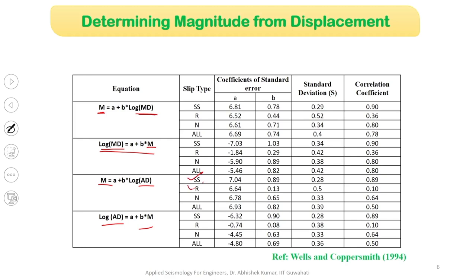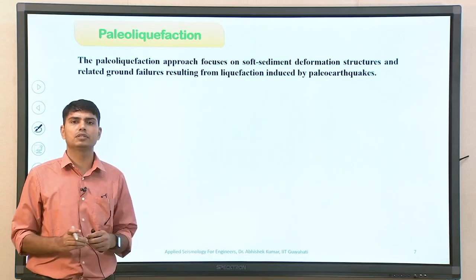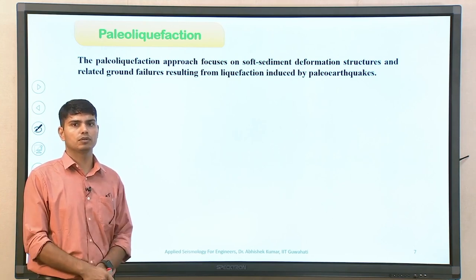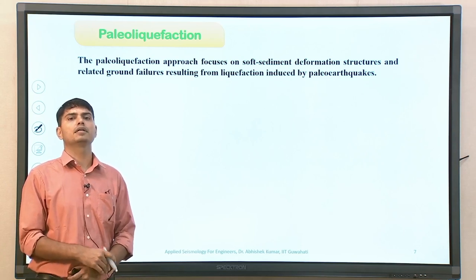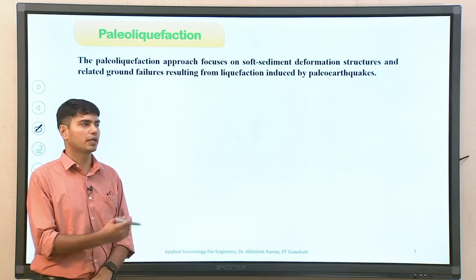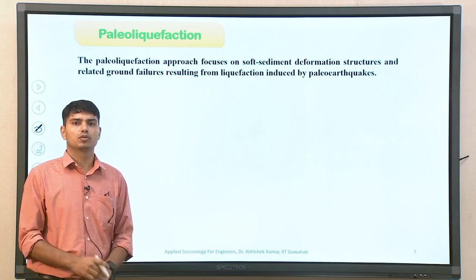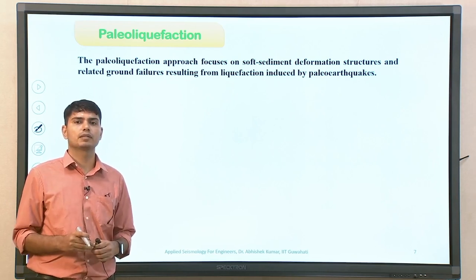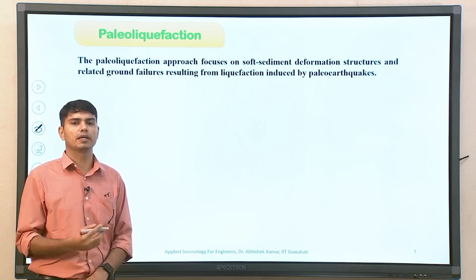Depending on whether it is strike-slip faulting, reverse faulting, or normal faulting, each correlation has different values of coefficients. So you can use the correlation both ways: from magnitude to displacement and from displacement to magnitude. These magnitude determinations can be for historic earthquakes as well as recent earthquakes, since the fault offset or surface rupture length preserved over a period of maybe 700–800 years allows an approximate determination of the earthquake magnitude. This addresses paleo earthquakes — discussing historic earthquakes in terms of some manifestation or deformation generated on the ground surface maybe several hundred or thousand years back.